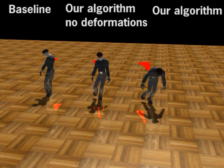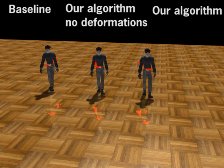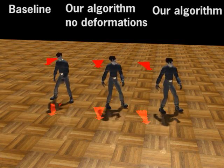The deformations are important. In the middle, we show what happens if we don't deform the example. In this case, the actor responds to the wrong push.